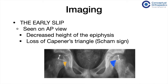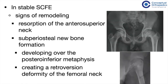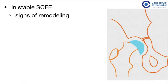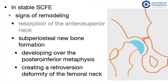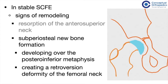In stable SCFE, we can see signs of remodeling whereby there is resorption of the anterior superior neck, and we can also see subperiosteal new bone formation which develops over the posterior inferior metaphysis, creating a retroversion deformity of the femoral neck. This deformity is also known as a pistol grip deformity.